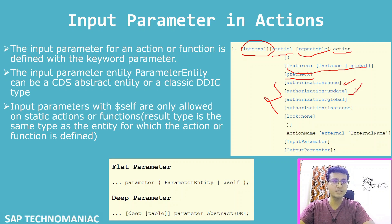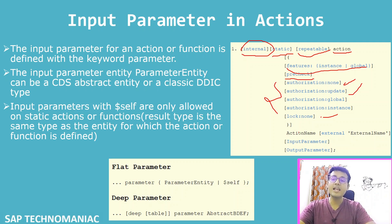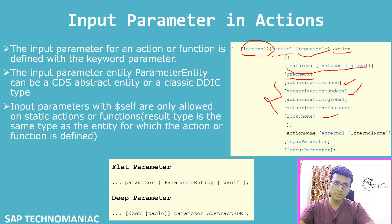If you don't want to define any authorization, you can use 'authorization none' as well. And if you don't want to lock your particular entity when you are calling this particular action, you can use 'lock none' as well. These are all the characteristics of that particular action. Then you have to give your action name.